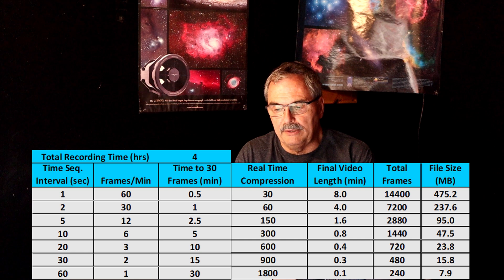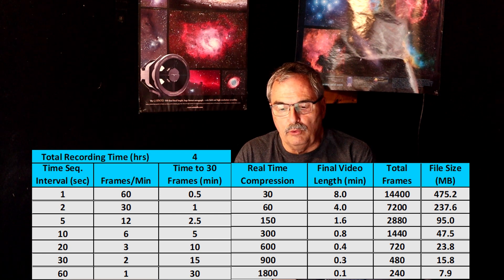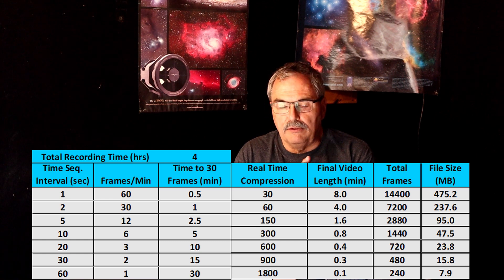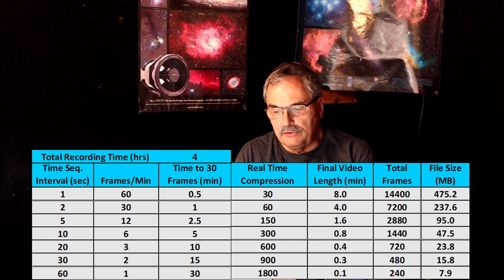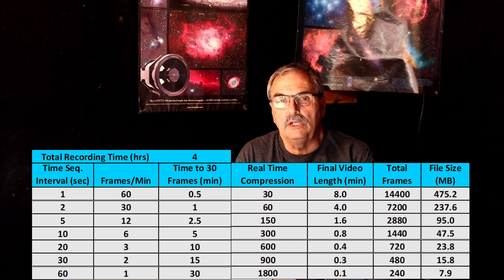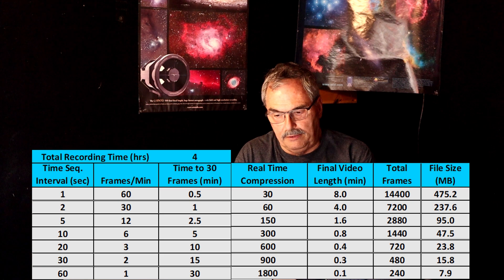You can also see how many frames you get total: 14,400 frames at one frame per second over four hours, down to only 240 frames at the other extreme. And looking at file sizes, since the C-Star has about 54 gigabytes of storage, you're not going to run out of storage even if you shoot at one frame per second.